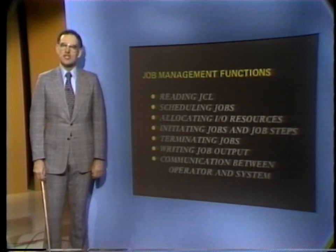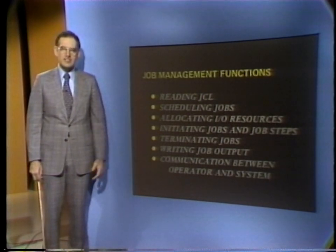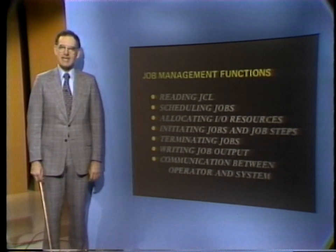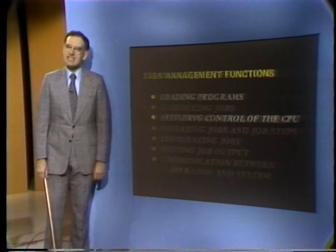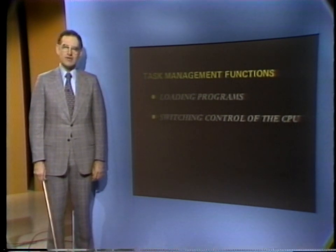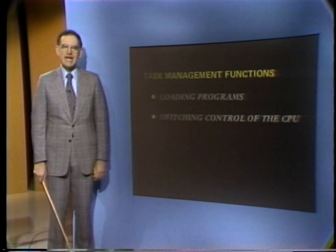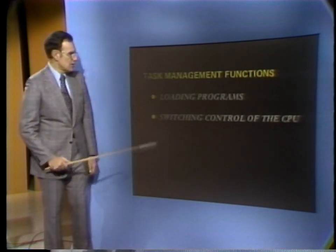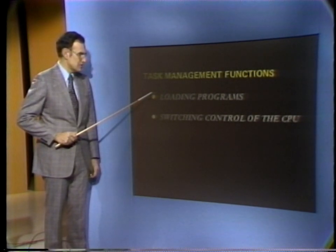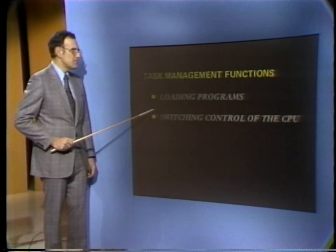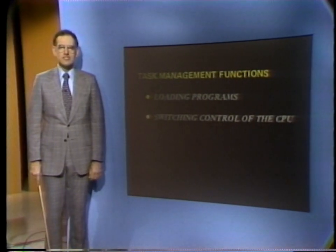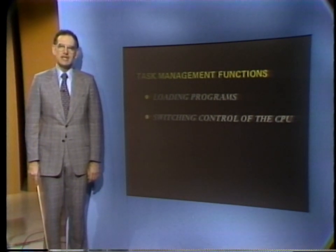In general, the job management routines handle all the work that is necessary to prepare for the execution of the programs that accomplish your job and to clean up after execution is complete. Task management, on the other hand, is responsible for actually getting a program into execution and monitoring its progress. Thus, task management performs such functions as program loading and, in a multiprogramming environment where many programs occupy storage at the same time, switching control of the CPU from program to program. It is called task management because once a program is ready for execution, it is referred to as a task.